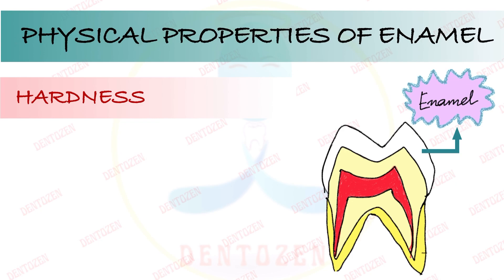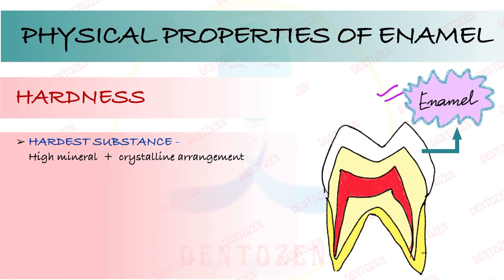You know the hardest substance in your body is present inside your teeth. Yes, enamel is the hardest substance in the human body — and that is your viva question. Why hardest? Because of the presence of high mineral salts and their crystalline arrangement. There are a lot of minerals and crystal structure involved.